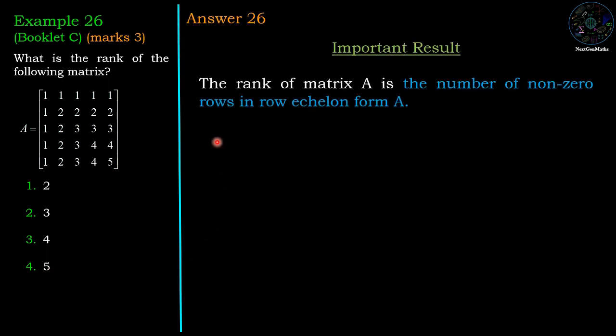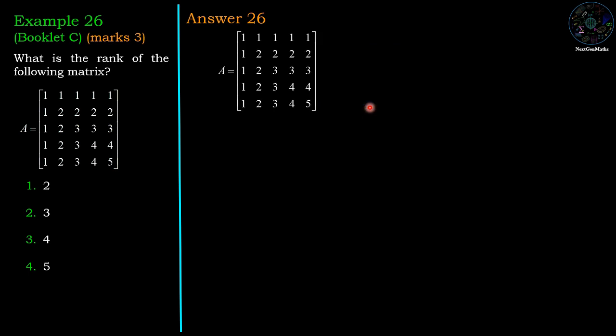Important result: the rank of matrix A is the number of nonzero rows in the row echelon form of A. So first, we convert matrix A into its row echelon form.